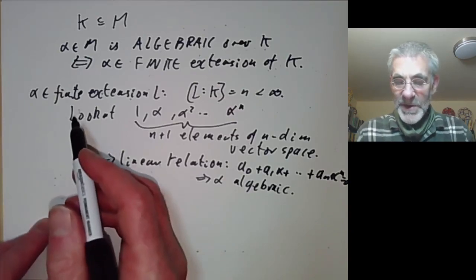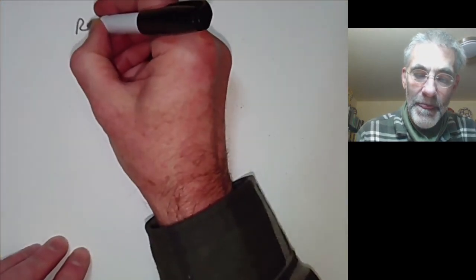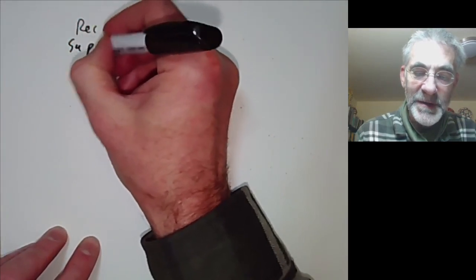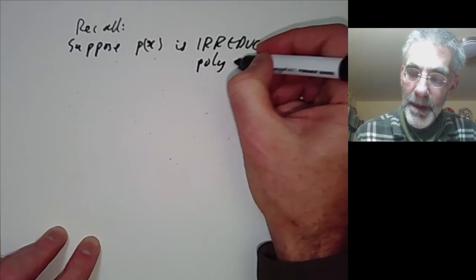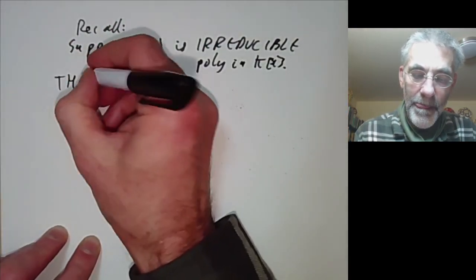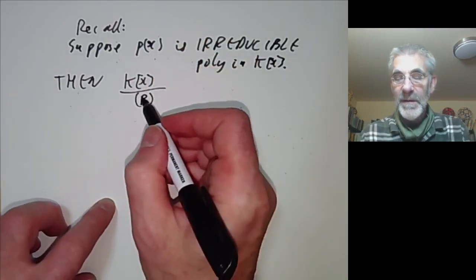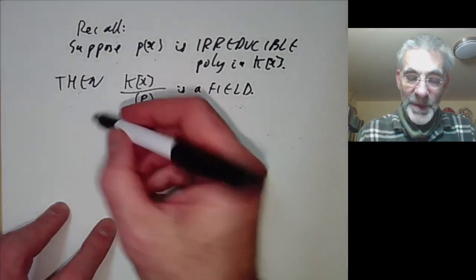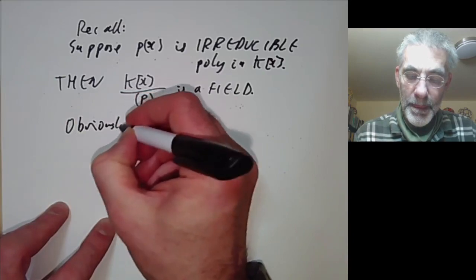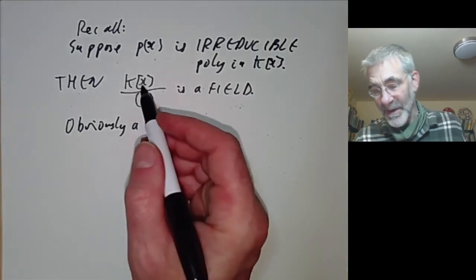On the other hand, we want to show that if alpha is algebraic, then alpha is contained in a finite extension. For this, we recall a way of constructing finite extensions: suppose p(x) is an irreducible polynomial in K[x]. Then we can form the quotient ring K[x]/(p(x)), and this is a field. It's automatically a ring, because quotienting any commutative ring by an ideal always gives a ring. The problem is the existence of inverses.